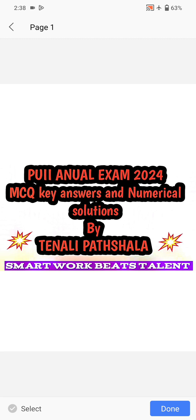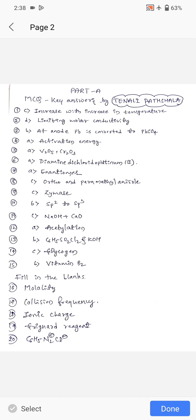These are the answers for MCQs. First: increase with increase in temperature. Second: limiting molar conductivity. Third: at anode, lead is converted to lead sulfate. Fourth: activation energy. Fifth: V2O5 vanadium pentoxide and chromium trioxide. Sixth: diamine dichlorido platinum 2. Seventh: enantiomer. Eighth: arco and para-methyl anisole. Ninth: C option, zymase. Tenth: B option, sp2 to sp3. Eleventh: C option, NaOH plus calcium oxide soda lime. Twelfth: acetylation. Thirteenth: benzene sulfonyl chloride and KOH. Fourteenth: C, glycogen. Fifteenth: B, vitamin B2. Fill in the blanks: molality, collision frequency, ionic charge, Grignard reagent, ion, benzene diazonium chloride.